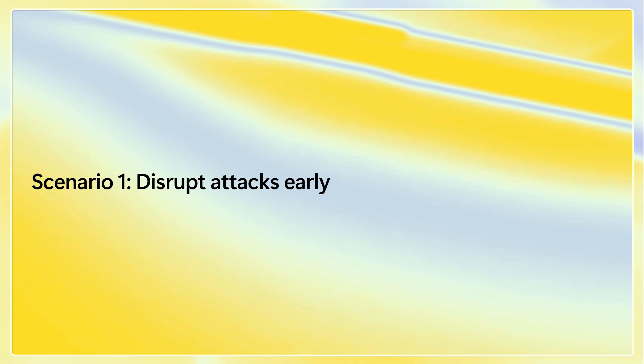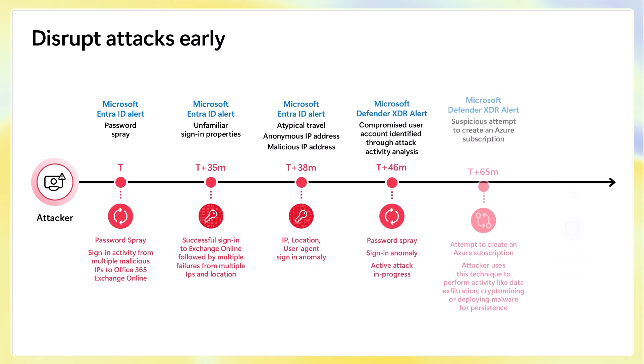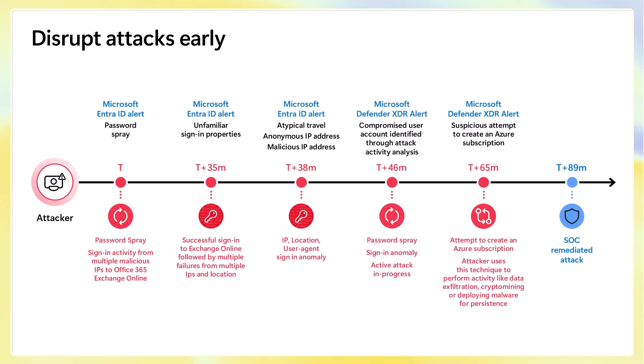Let's take a look at how we actually disrupt an attack with Defender automatic attack disruption. We're going to look at an identity-based attack. This one starts off with a password spray occurring against Entra — happening inside of the cloud. That then proceeds into an unfamiliar sign-in property, where we see that the user was able to be compromised and acquire a logon. We then see alerts about atypical travel, an anonymous IP address, and malicious IP addresses. Then we see a Defender XDR alert because a compromised user account was identified through activity analysis.